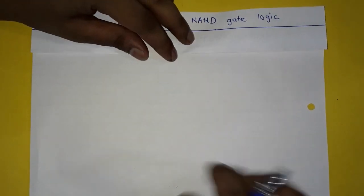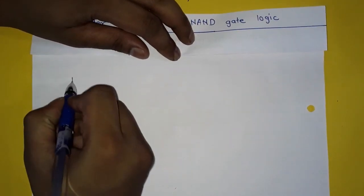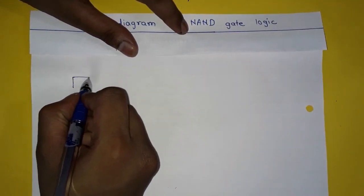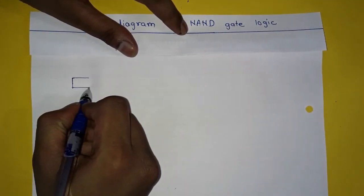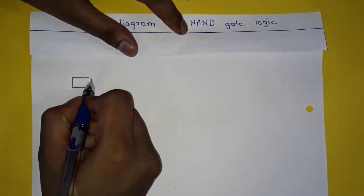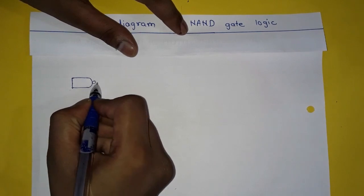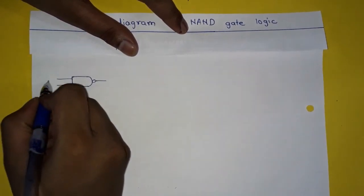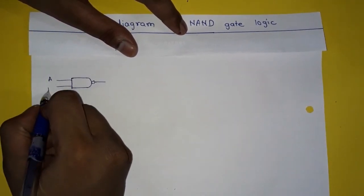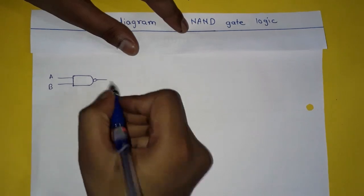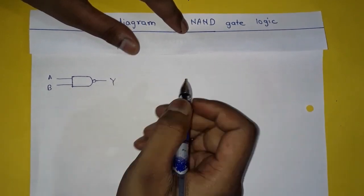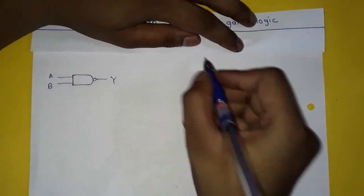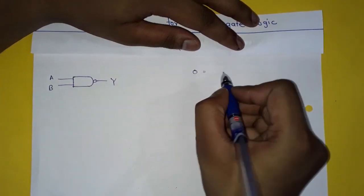This is the symbol of the NAND gate logic. This is A, this is B, and this is Y — that is our output.